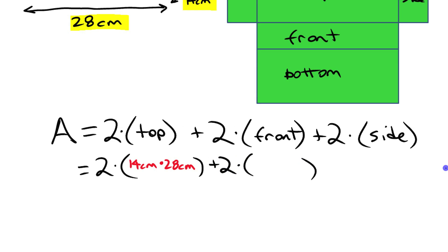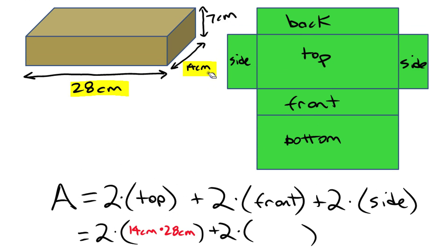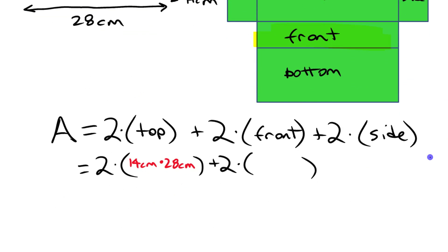And the front, the front is the one here. Let's get rid of that. The front here, also this on here, that's the one that's 7 times 28. So let's put it in our formula here. 7 centimeters times 28 centimeters.